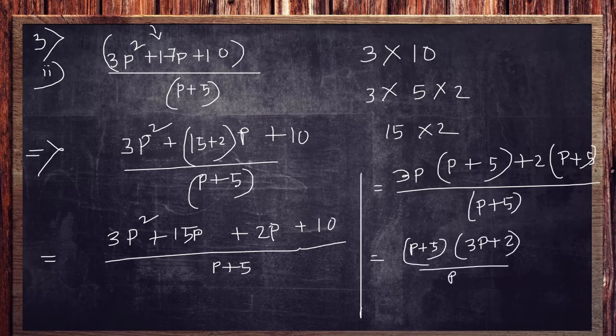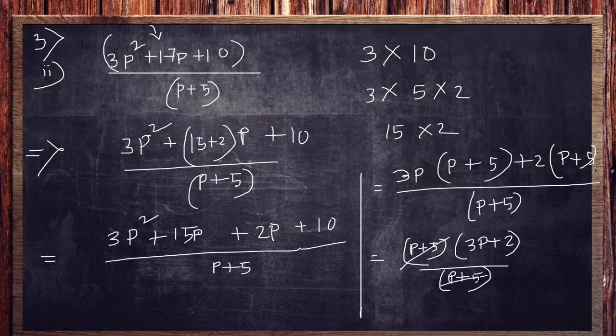That also divided by p plus 5. Now it is very much clear to you, these two are going to cancel each other. So final answer is 3p plus 2.